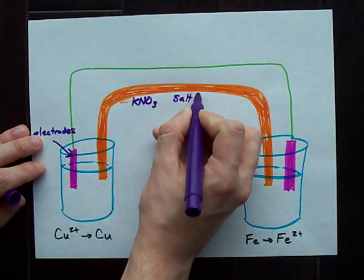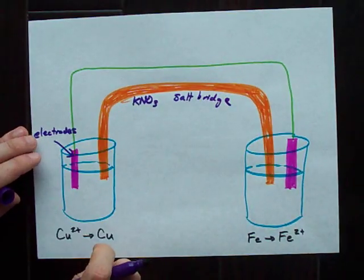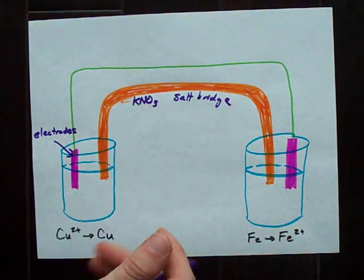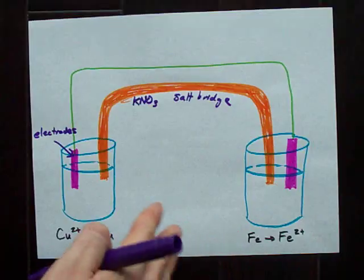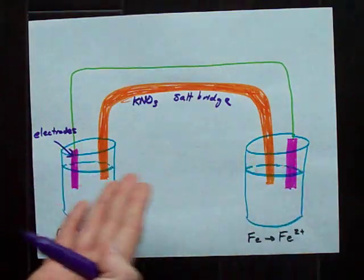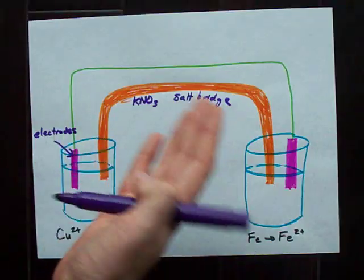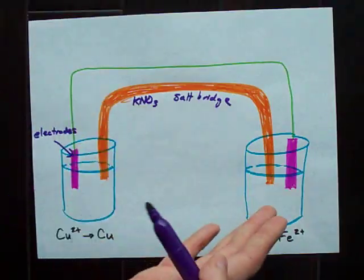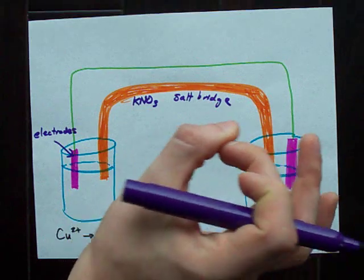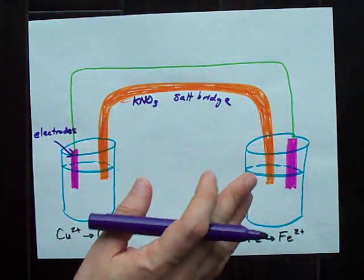This is called a salt bridge, and what it does is it helps to counteract any changes in charge that will be happening. As you know, these reactions have electrons flowing from one side to another — you're losing minuses and gaining pluses in all these different places. This salt bridge helps keep everything overall in each area neutral.